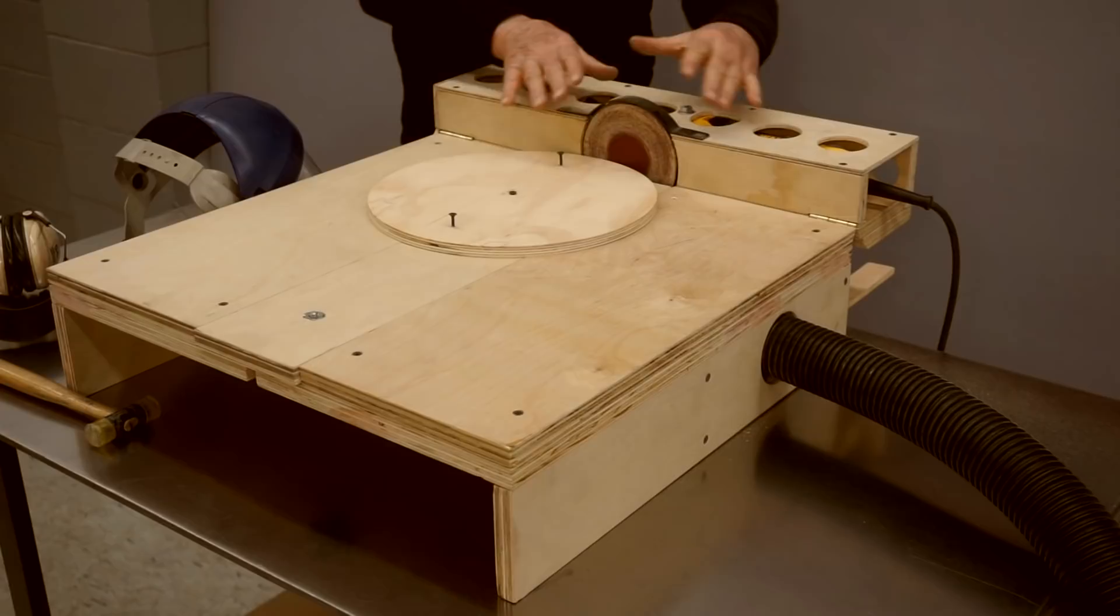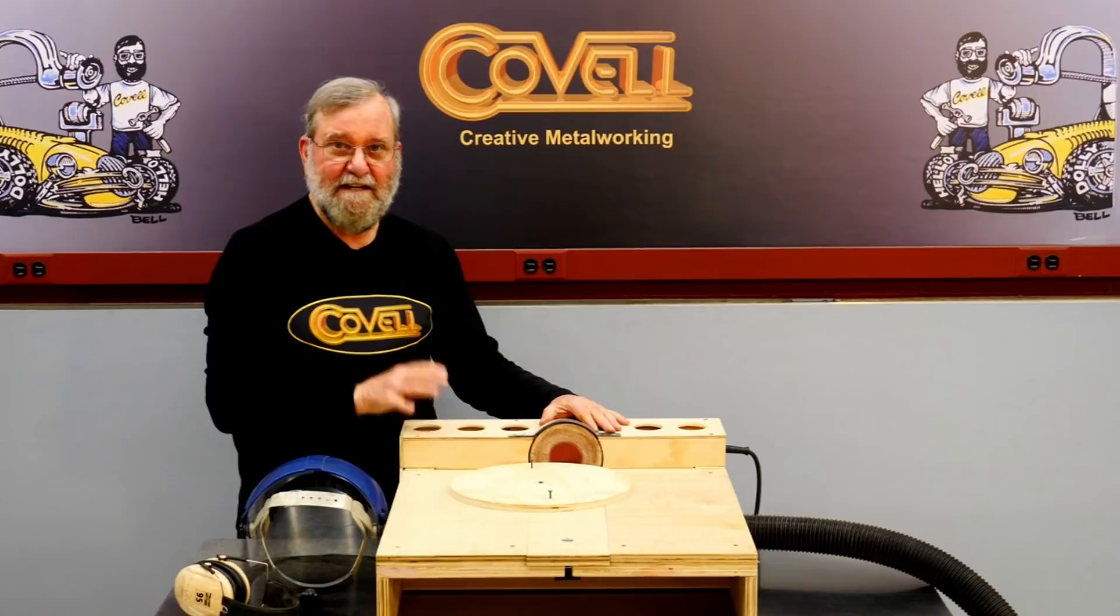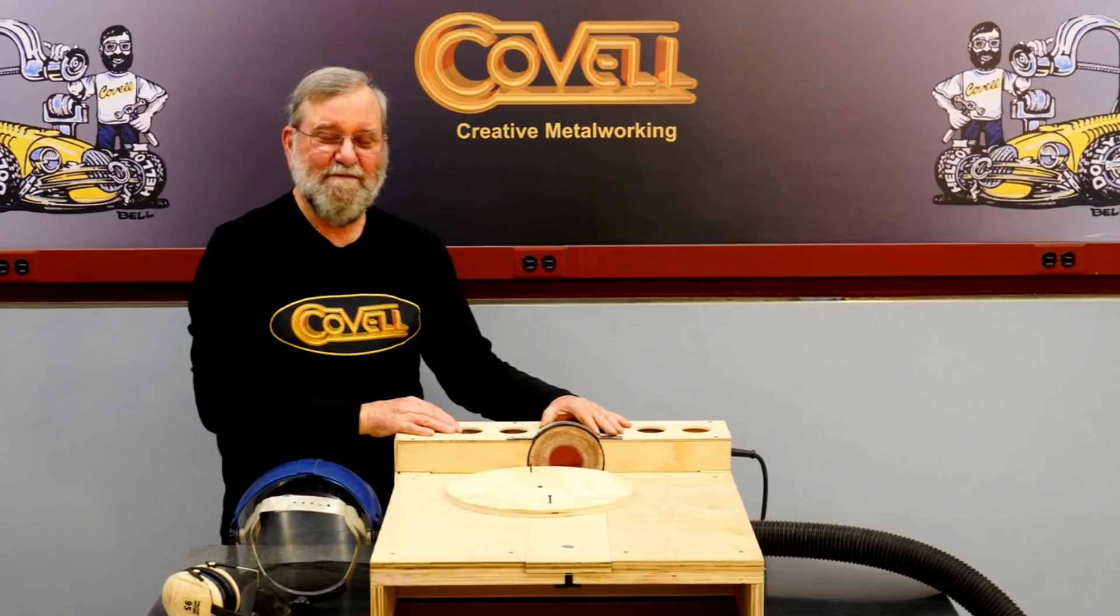So this is really working super well. I think just the shrouding around the sanding disc helps a lot too, but having the vacuum extract that dust makes all the difference in the world. So I'm very glad I took the time to make this modification to my fixture.